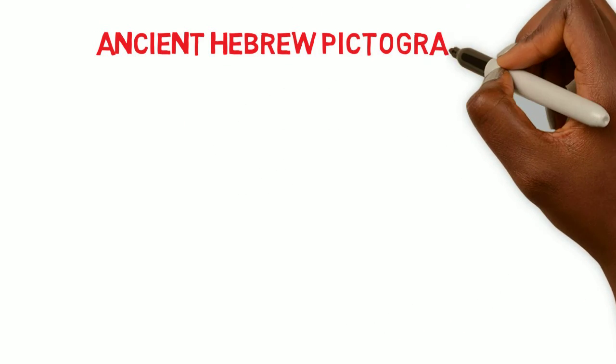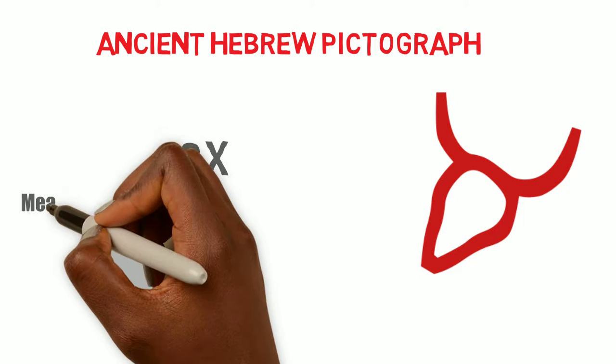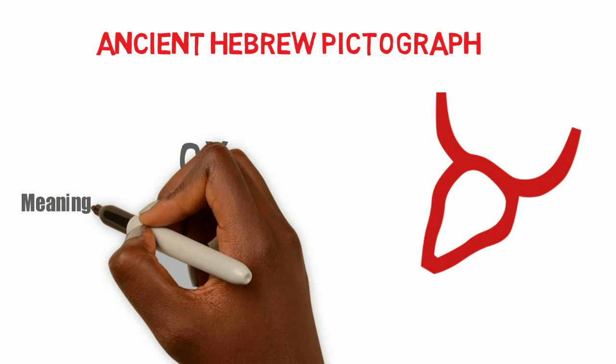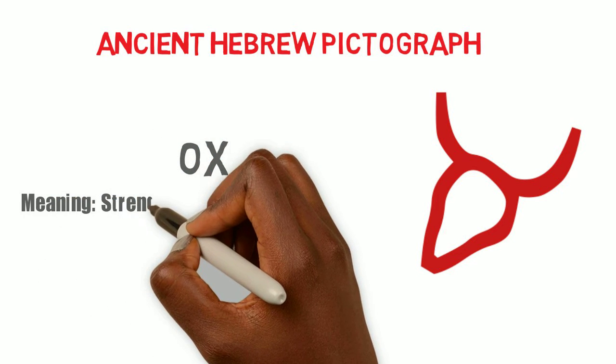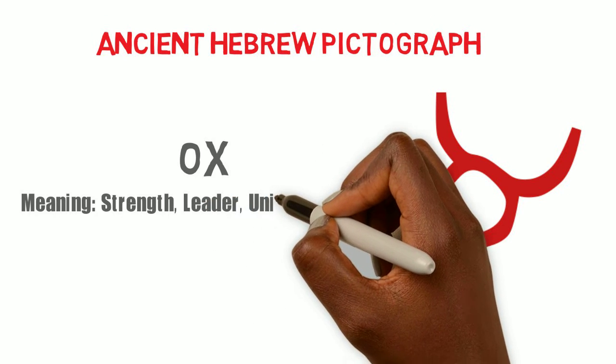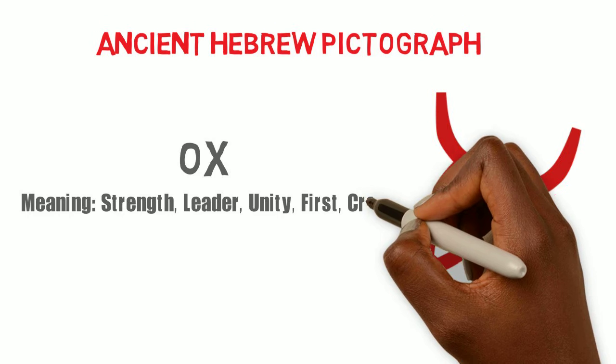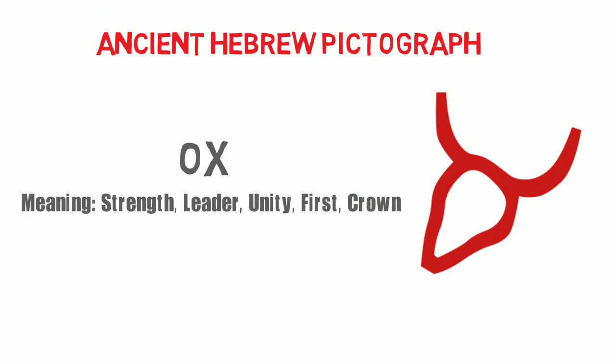The Aleph pictograph looks like this symbol here. It looks like an ox. Now the pictograph also carries meaning with each letter symbol. So in addition to looking like an ox head, Aleph also means strength, leader, unity, first, and crown.